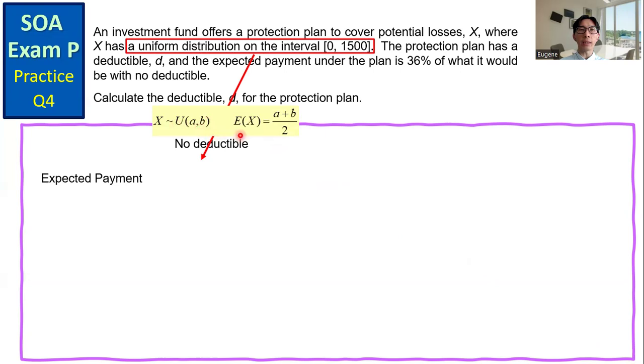the expected value equals A plus B over 2. So the expected payment without any deductible is 750.